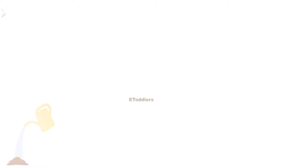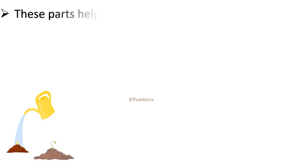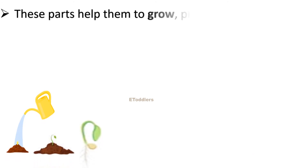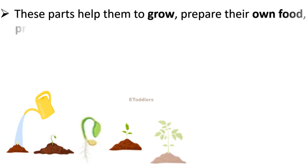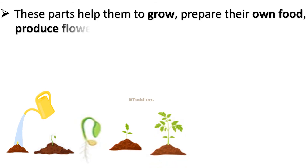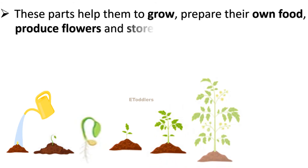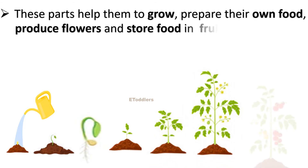These parts help them to grow, prepare their own food, produce flowers and store food in fruits.